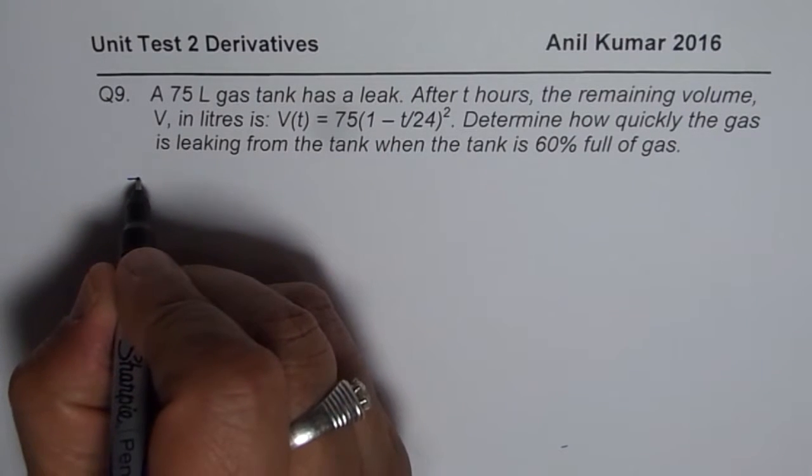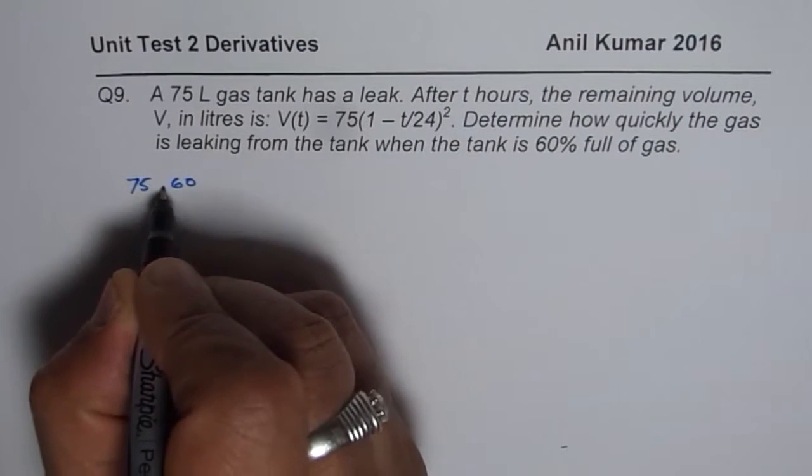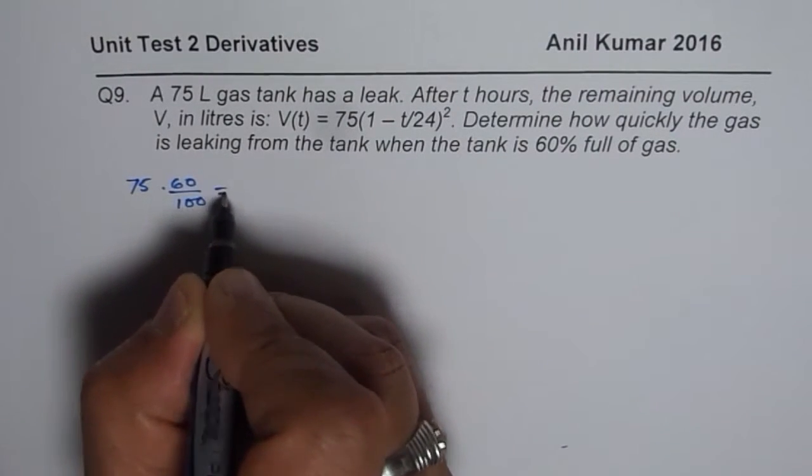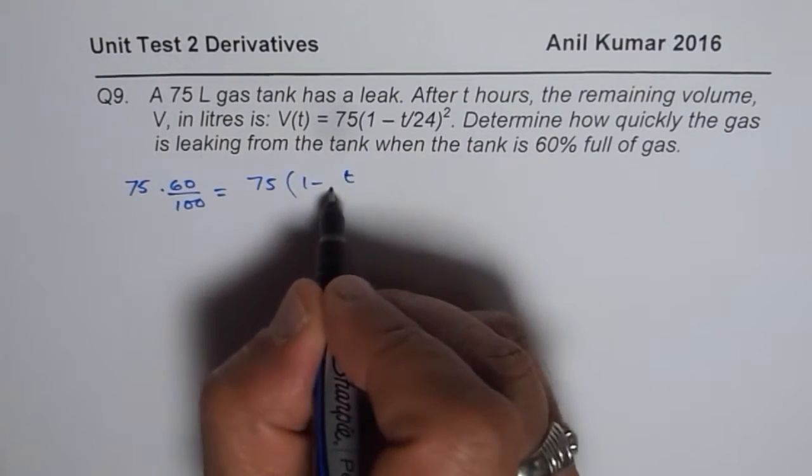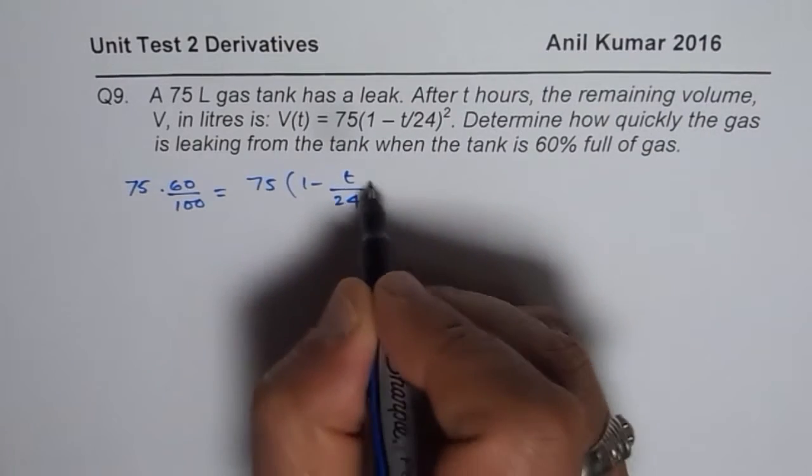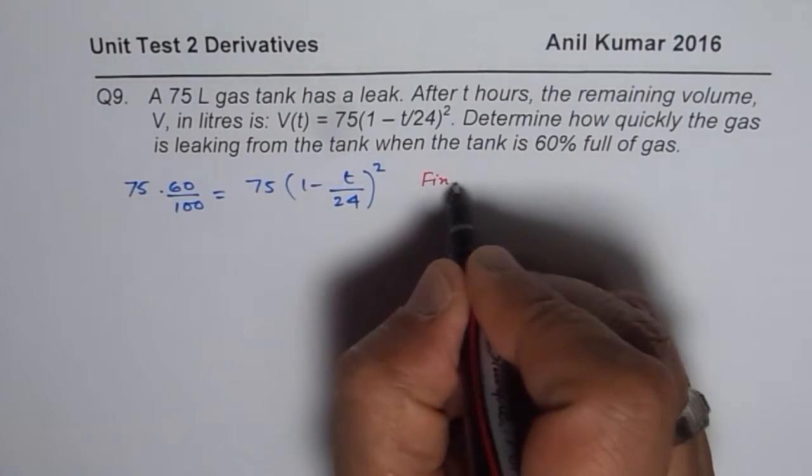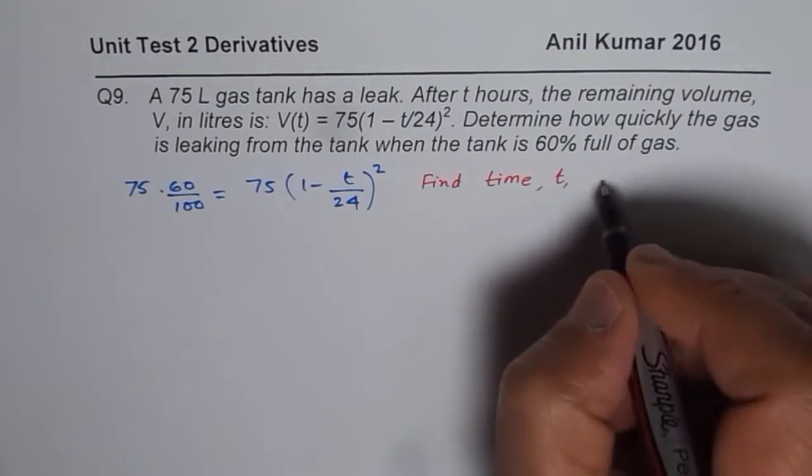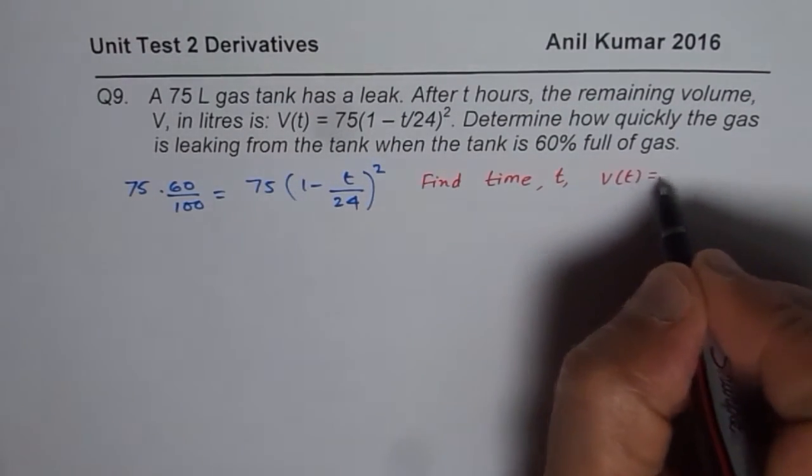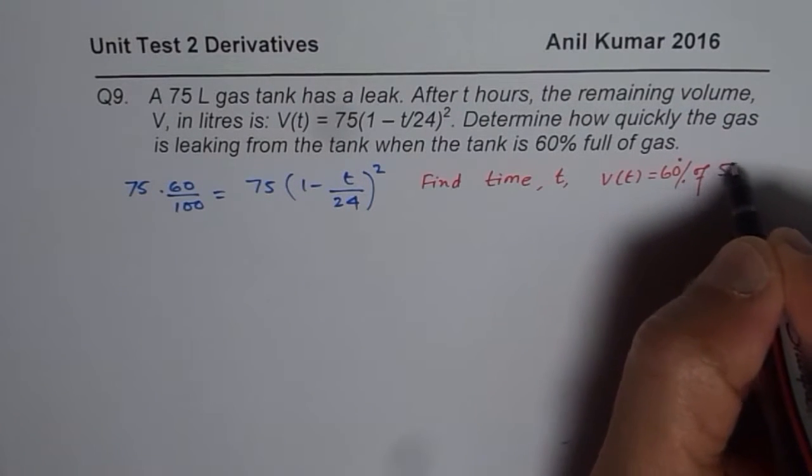So we'll say 75, 60% of means 75 times 60%, 60 over 100. That is equal to 75 times 1 minus T over 24 whole square. So first step here is to find time. So first step here is to find time T when V of T is equal to 60% of 75 liters.